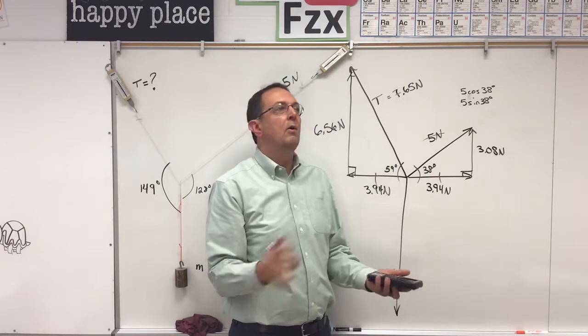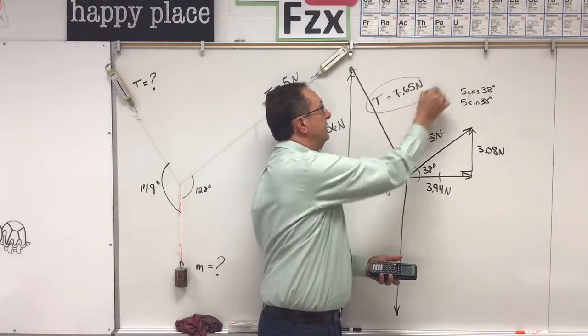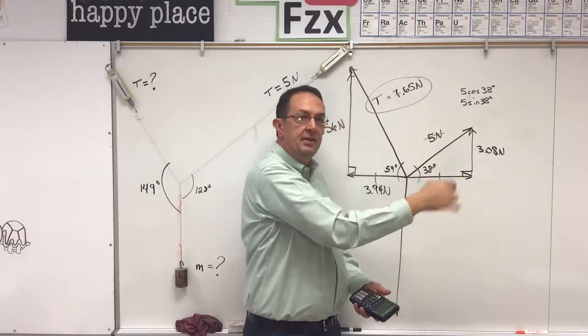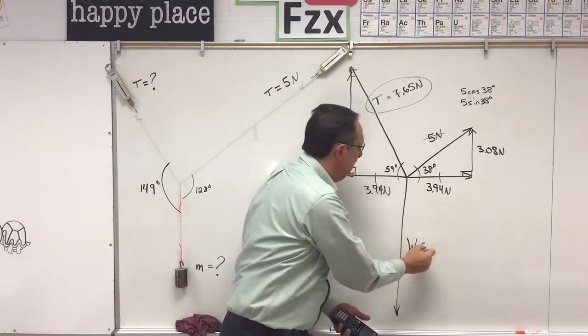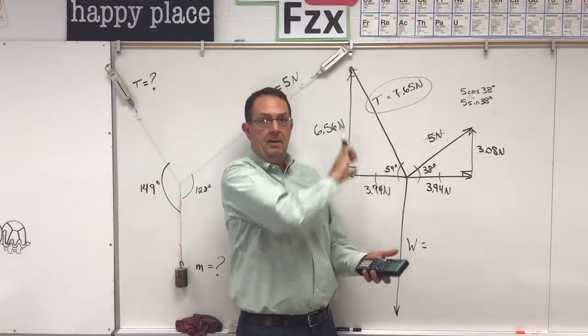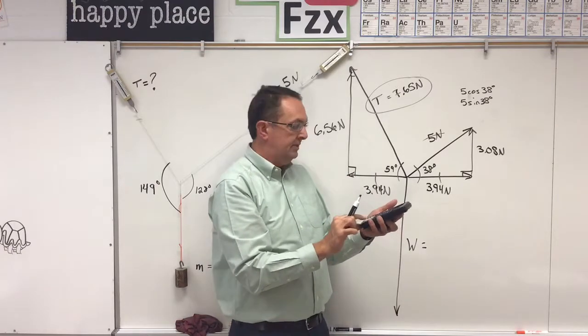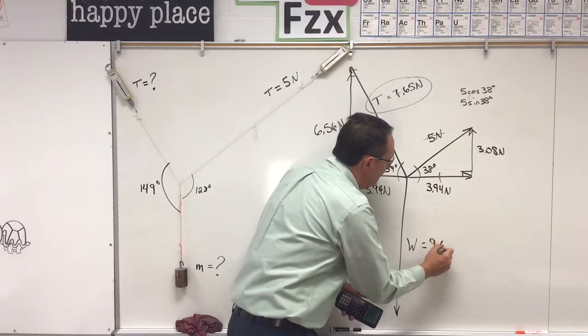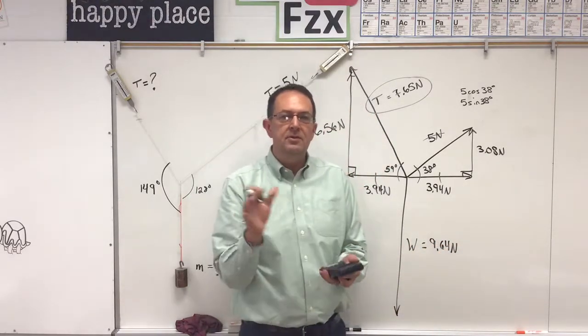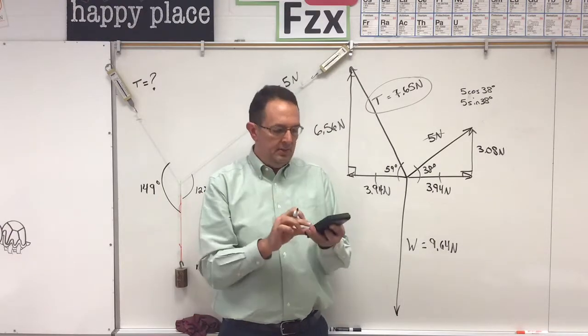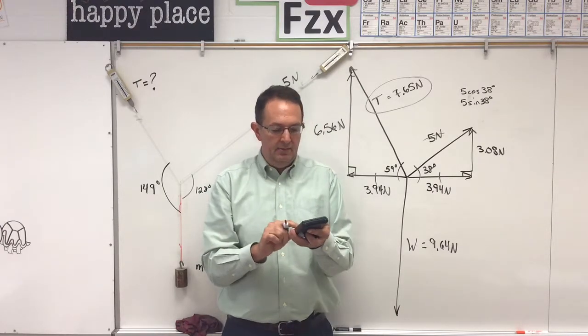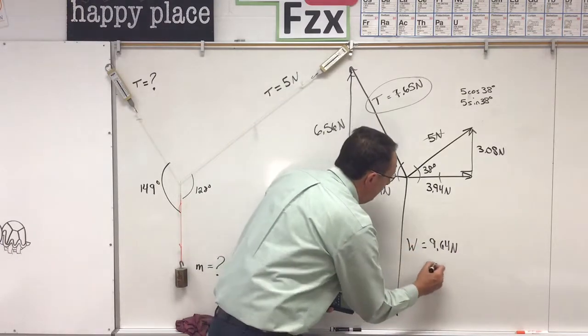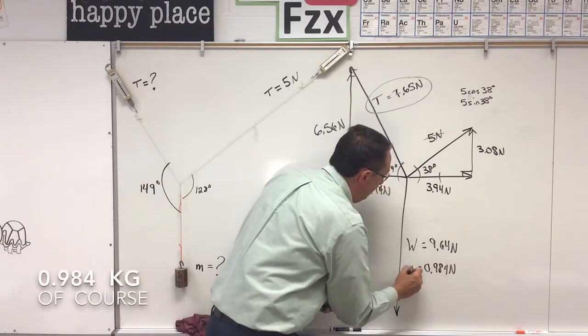So I'm almost done. So now that I have the 7.65, which is an answer, I'm going to ignore that, and then just pay attention to the 6.56 and the 3.08. Because that's going to have to balance this weight down here. W equals, and then the up and the up, those two ups, right? 3.08 plus 6.56 equals 9.64, 9.64 newtons. And that 9.64 newtons, W equals mg. This is real. So the 9.64 divided by 9.8 gives you .984. 0.984 newtons is the mass.